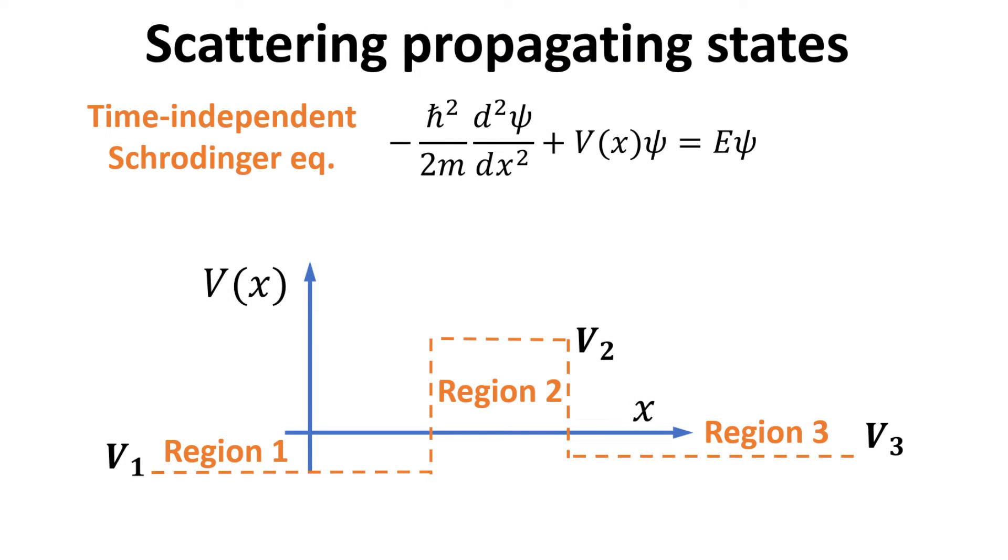Let's begin with the time-independent Schrödinger equation as shown, where the potential V describes a rectangular potential barrier. The potential can be divided into three regions, where the potential is a constant in each region, denoted as V1, V2, and V3.